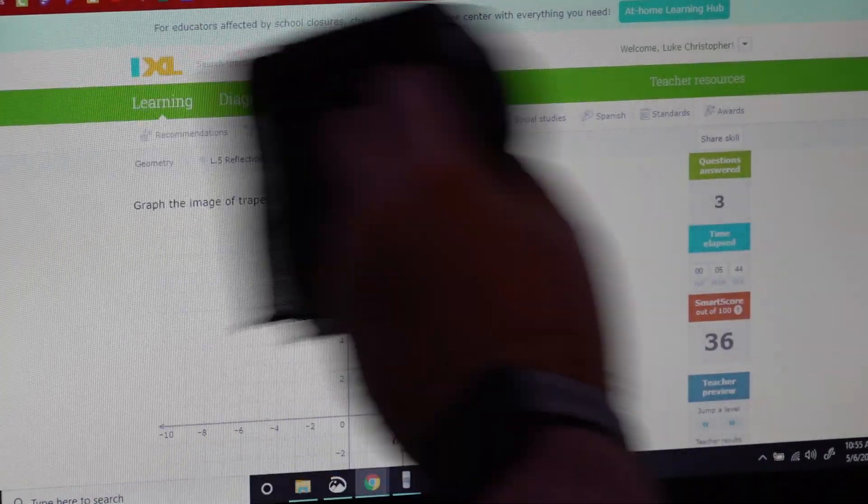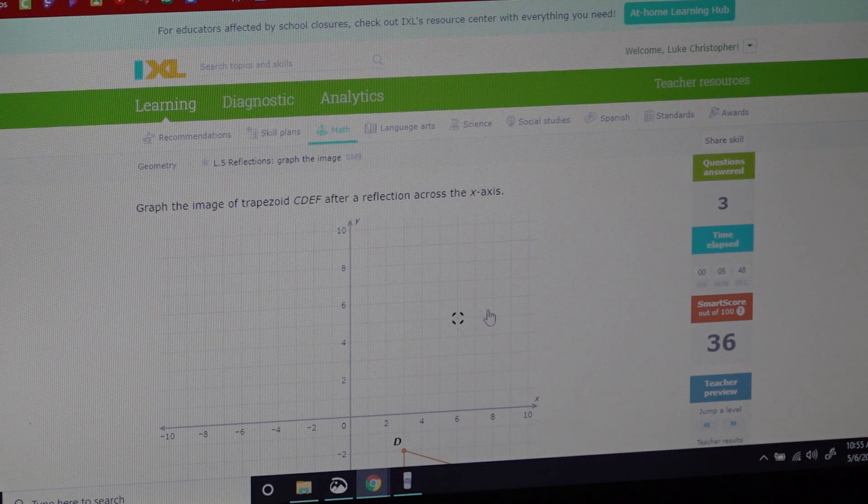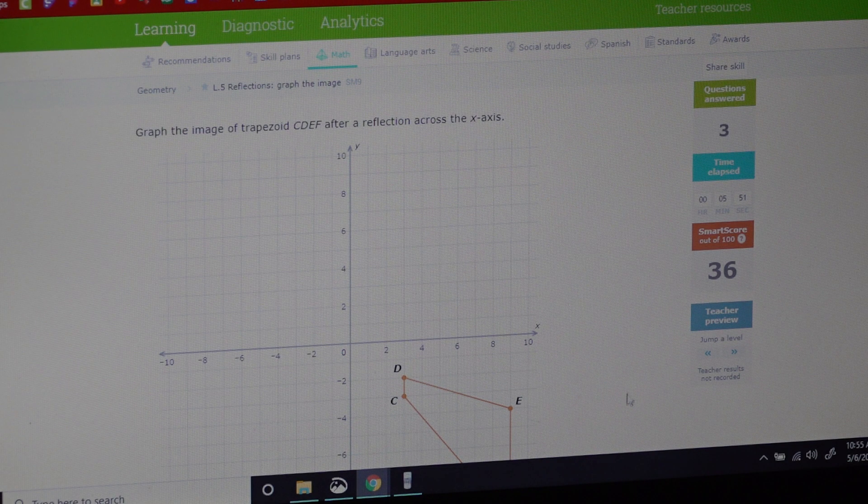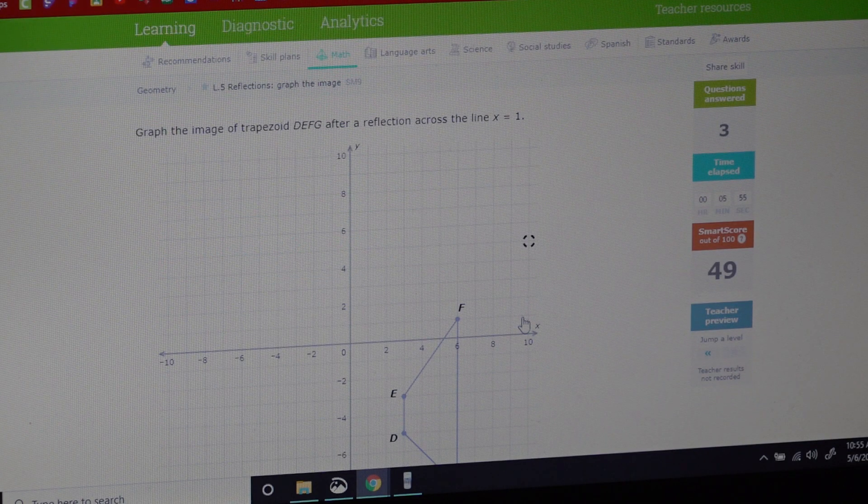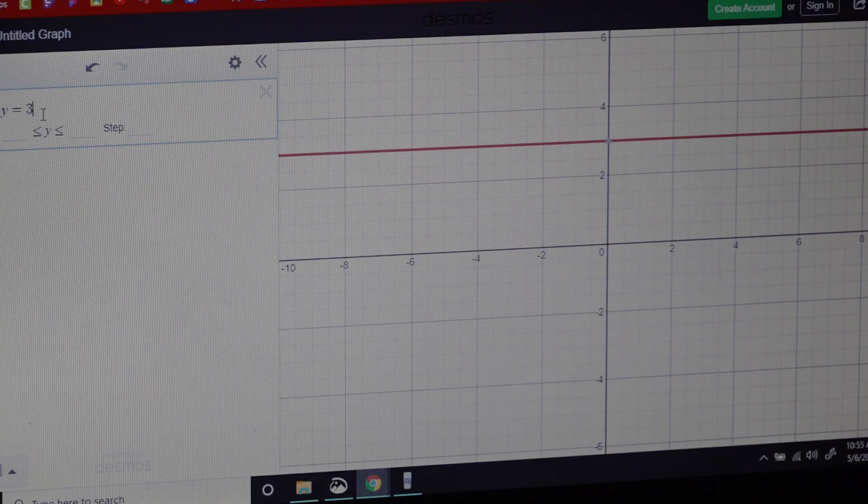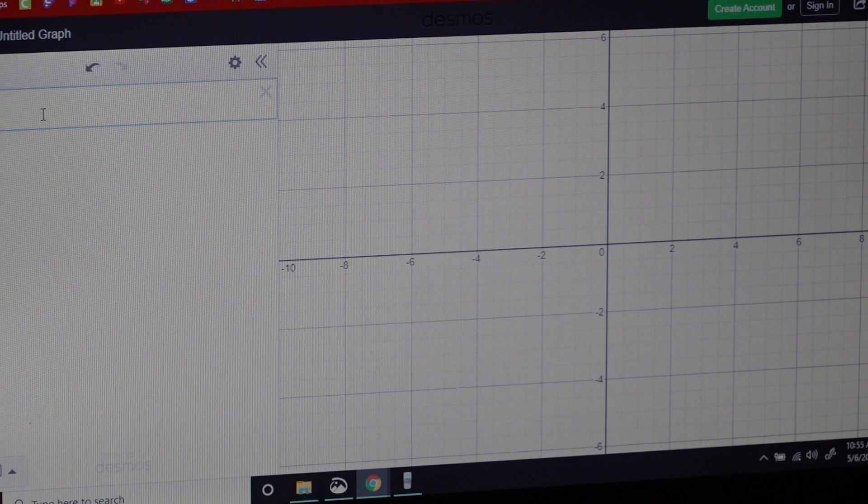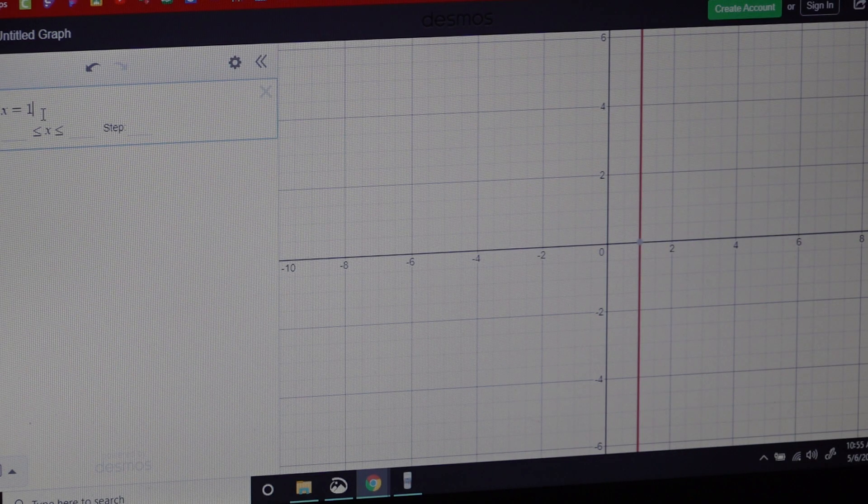Okay, again, reflect over the x-axis—we already gone over that—and x equals one. Again, go back to Desmos if you forgot. Type in x equals one—that's a vertical line at the one. So using the Expo, x equals one is right here.